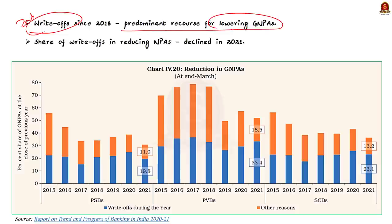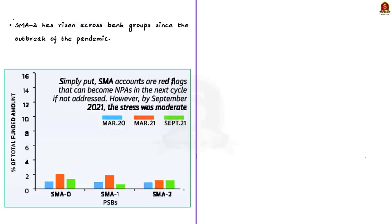See, the data point also talks about the stress hazards, that is, the accounts classified as SMA. According to the report, this SMA has risen across bank groups since the outbreak of the pandemic. That's all regarding this article. Let's move on to the next article.